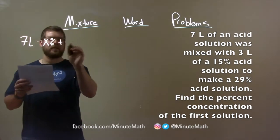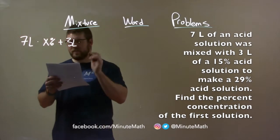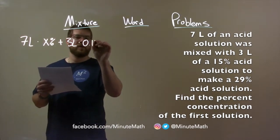We know we're combining that to the second solution, which is 3 liters, and that one contains 15% acid or as a decimal 0.15.